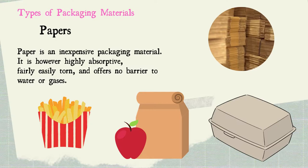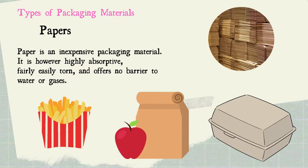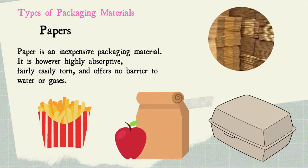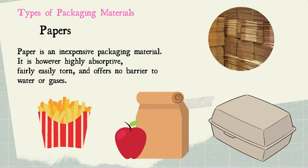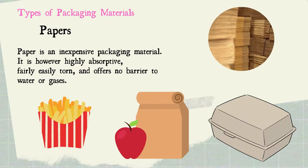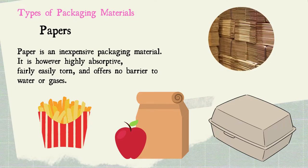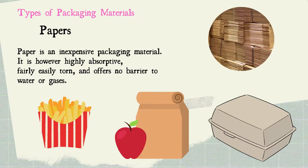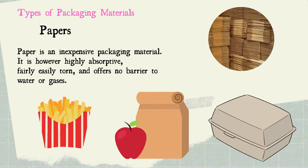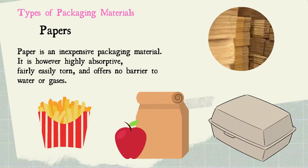Still on types of packaging materials: paper. Paper is an inexpensive packaging material; it is, however, highly absorptive, fairly easily torn, and offers no barrier to water or gases. The degree of paper reuse will depend on its former use, and therefore paper that is dirty or stained should be rejected. Newsprint should be used only as an outer wrapper and not be allowed to come into direct contact with food, as the ink used is toxic.